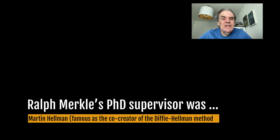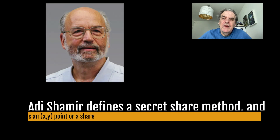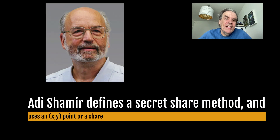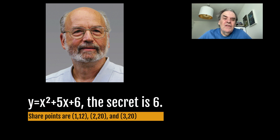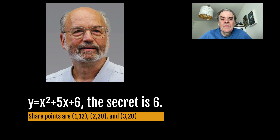Adi Shamir defined a secret share method which defines a mathematical equation for the sharing of x and y points, where a constant value of the equation is the secret. With Shamir's Secret Shares or SSS, for a quadratic equation of y = x² + 5x + 6, the secret is 6. We can share three points at x=1, x=2 and x=3, which gives y=12, y=20 and y=20 respectively. With the points (1,12), (2,20) and (3,20) we should be able to recover the value of 6.